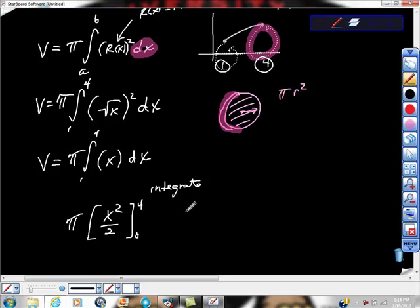And of course, that will be, let's see, 4 squared is 16. 16 over 2 is 8, so it's equal to 8π. So the volume is 8π.